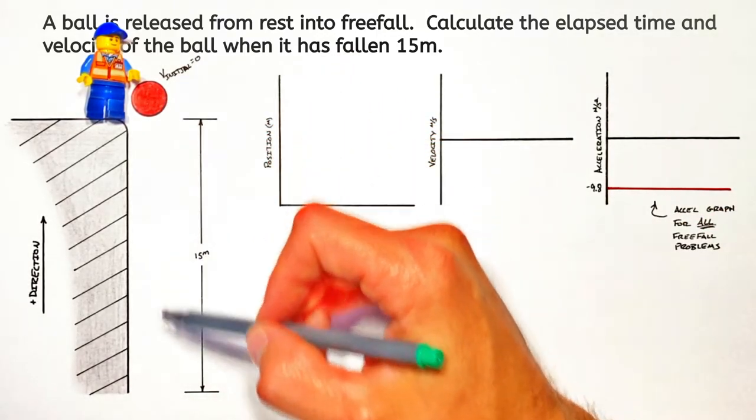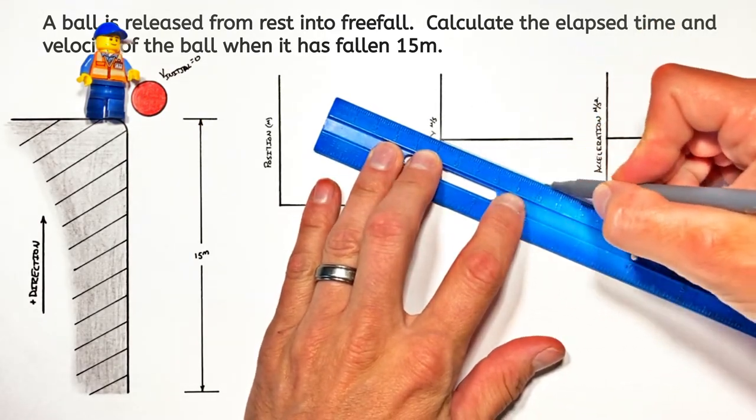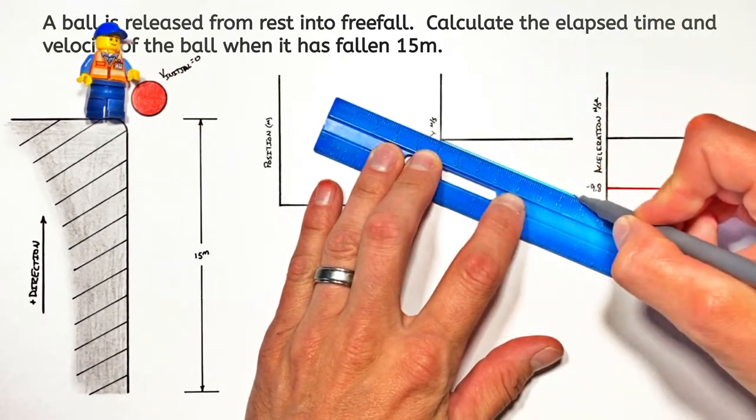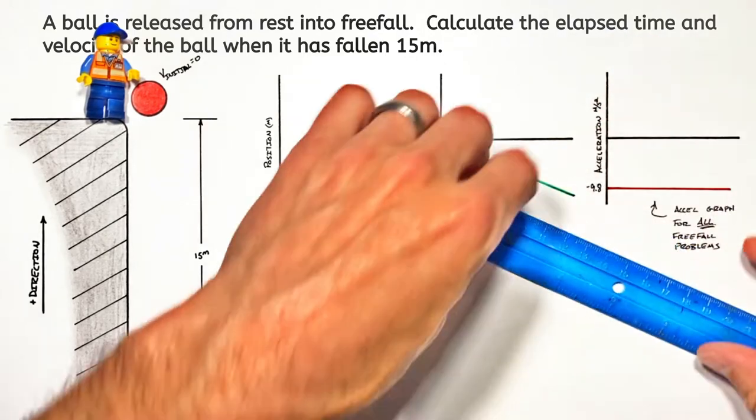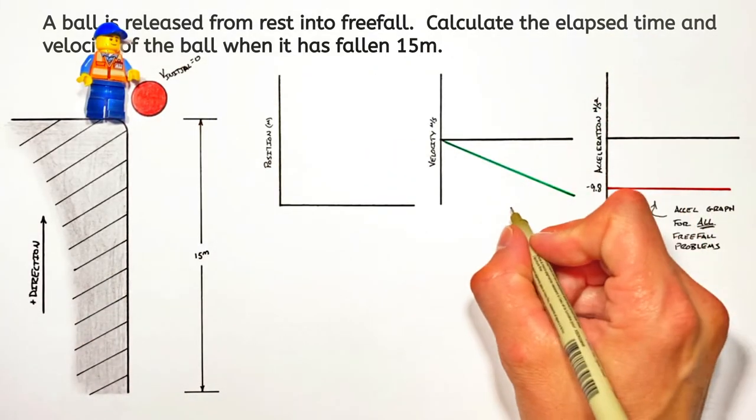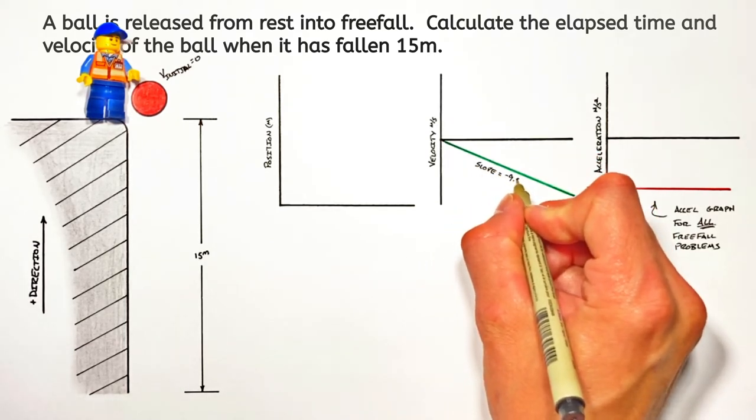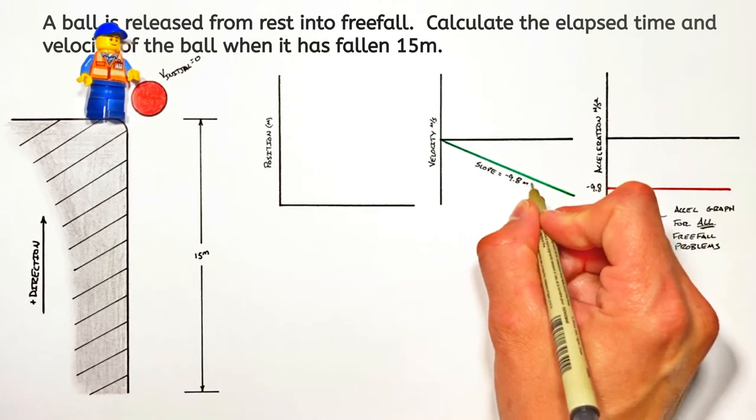Now moving on to velocity. We know the ball is going to start at rest, and as it moves downward it's going to speed up or accelerate. Because the ball is going to be moving downward, we'll see the velocity become increasingly negative. So on our graph we'll see a diagonal line that's trending downward, and it has a slope of negative 9.8 meters per second per second.